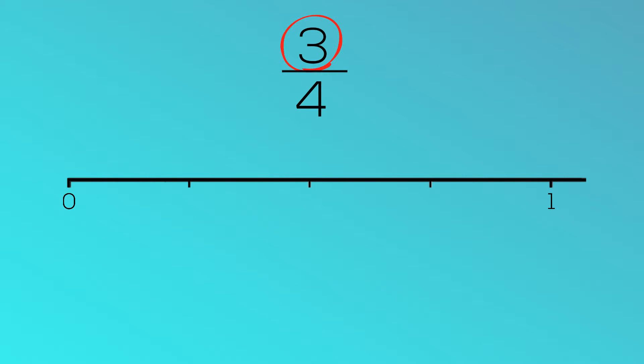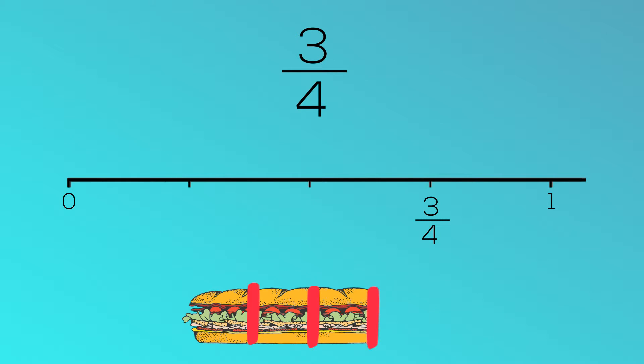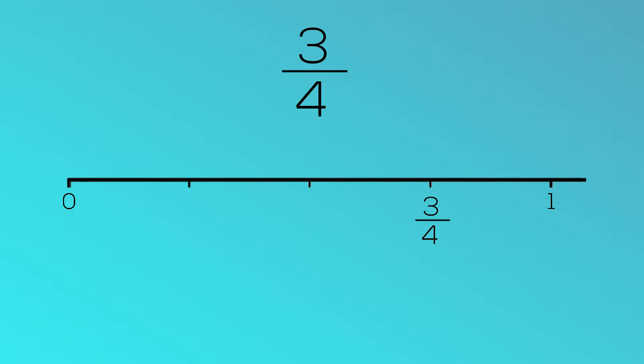Now we need to look to the numerator to work out how many fourths, or quarters, we have. We have three. Let's count along. One-quarter, two-quarters, three-quarters. We have found the fraction three-quarters on this number line.